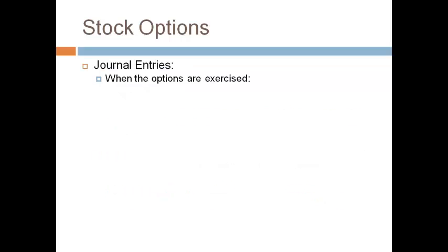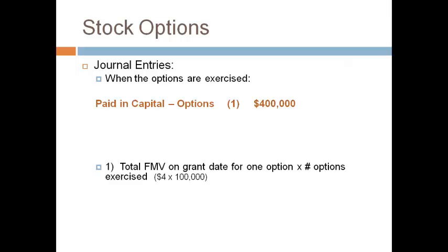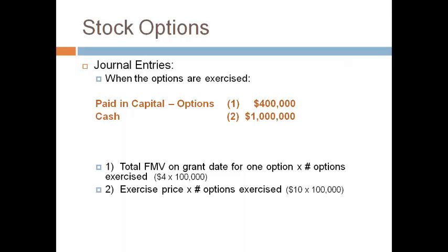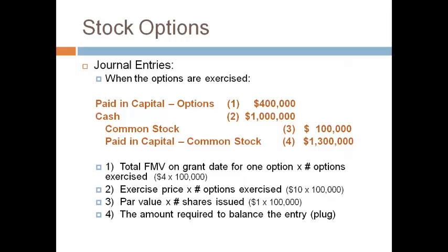There are two entries made to record transactions related to employee stock options. The first entry is to record the annual compensation expense. The second entry is made when the employee exercises their right to purchase common stock. The employee trades their right to purchase common stock and cash for common stock, paying the company cash for the total exercise price. The company receives the cash, removes the obligation to provide common stock to the employee, and records the issuance of the common stock sold to employees. Issuing common stock requires the same credit to common stock and paid-in capital recorded in the stockholders' equity section of this course. Common stock is always recorded at par times the number of shares, and paid-in capital is always a plug.